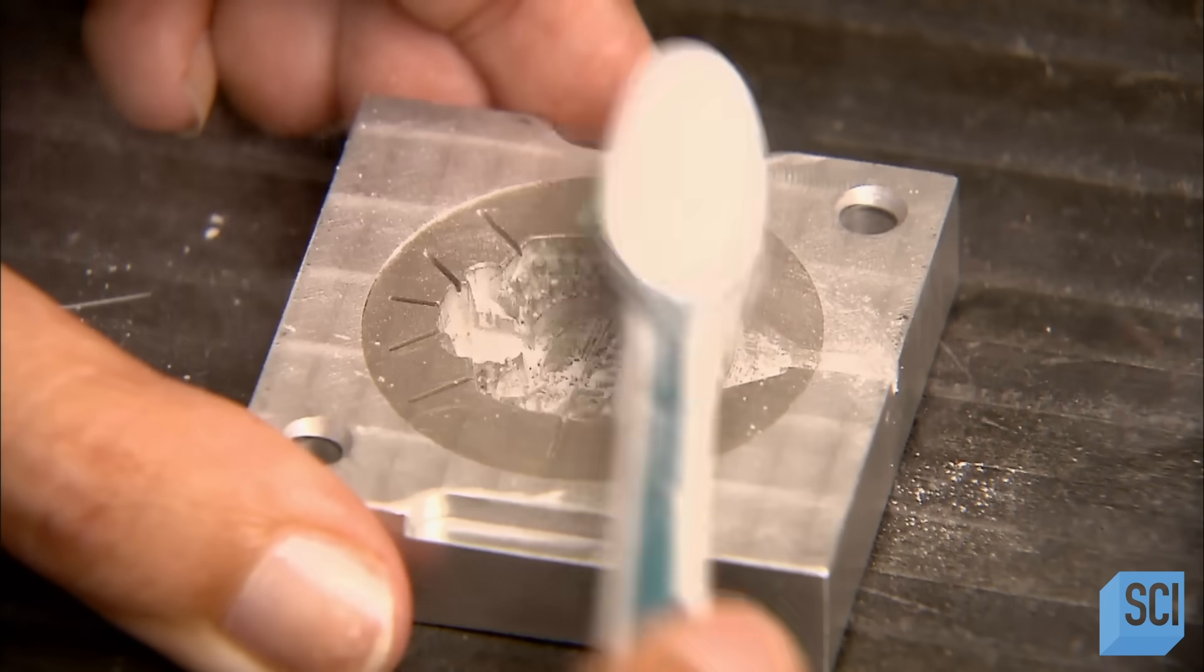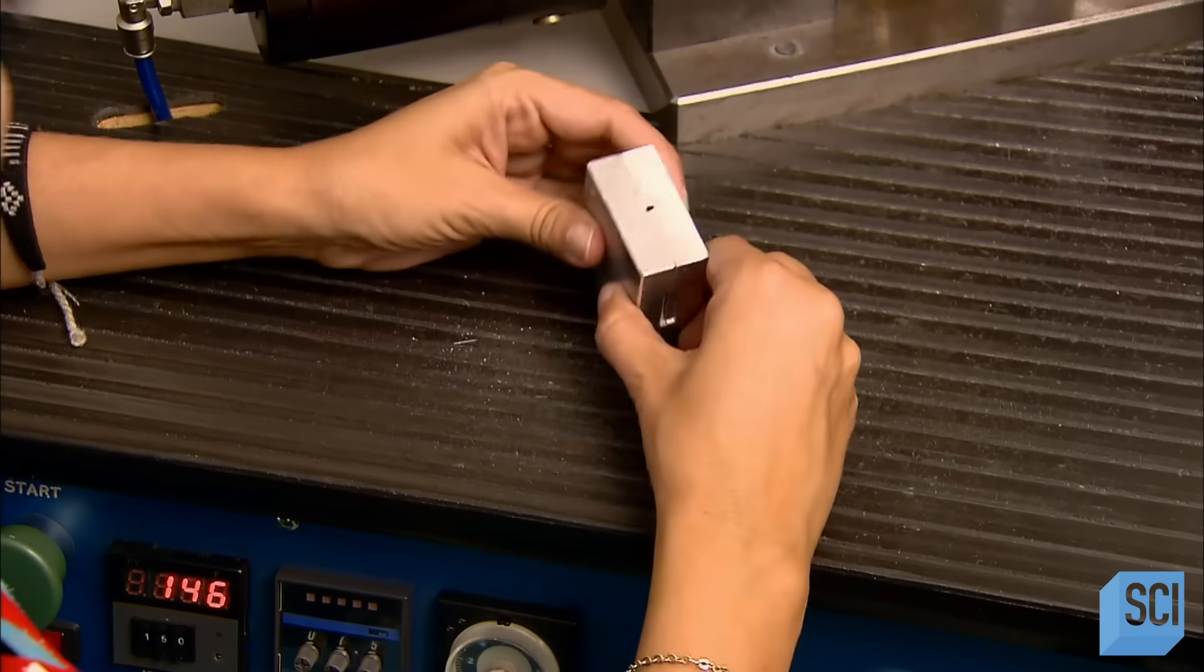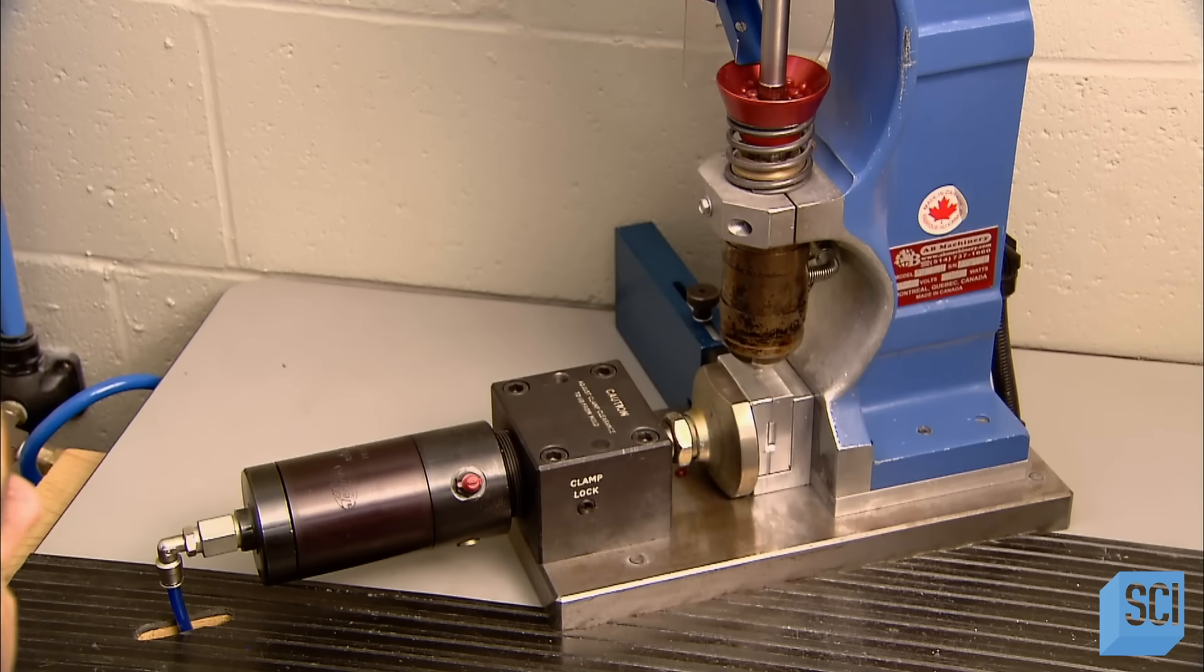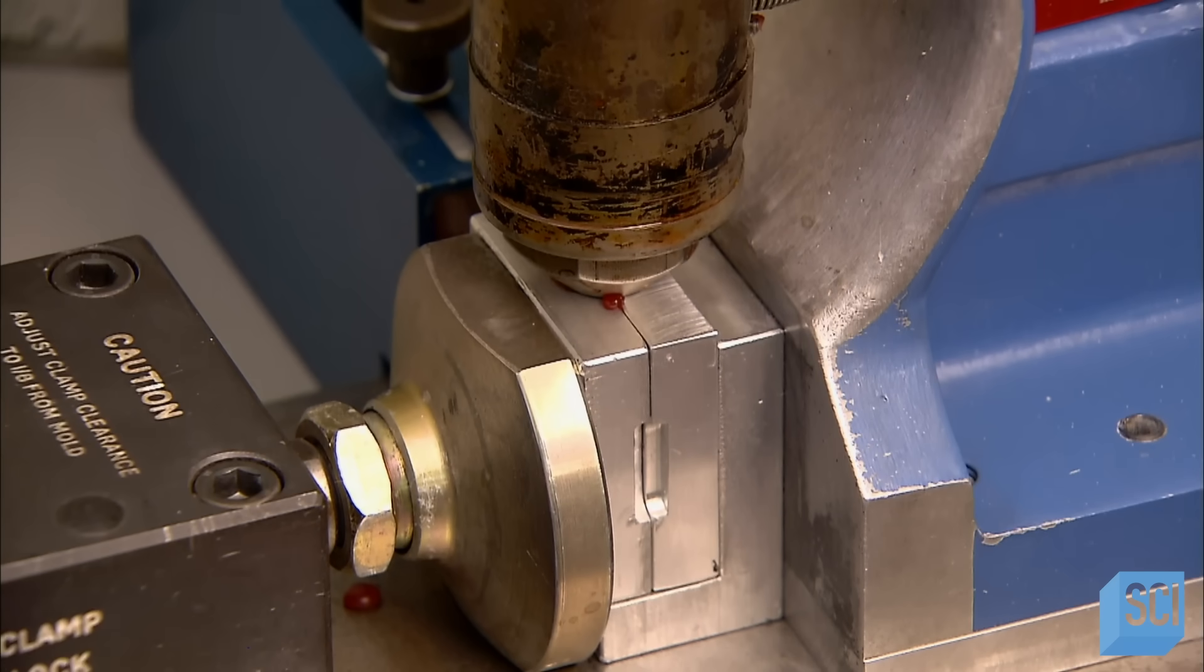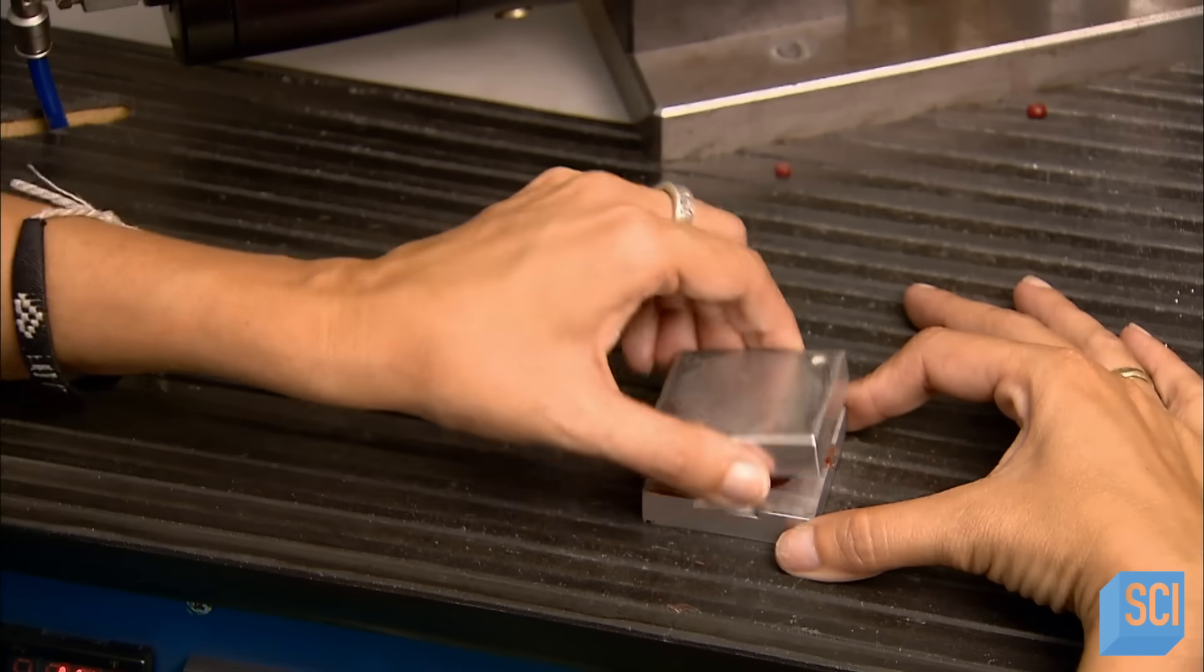Once it's finished, they coat the cavity with a powder that prevents the wax they're about to inject from sticking. Then they load the mold into an injection device. It shoots in hot liquid wax at high pressure, filling all the minute nooks and crannies of the intricately detailed cavity.